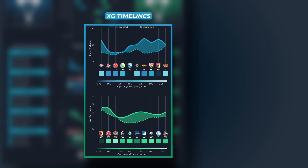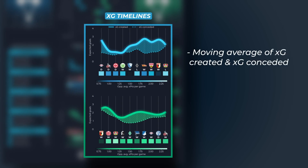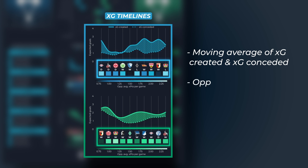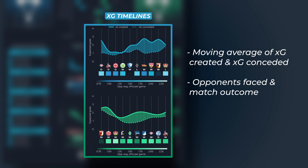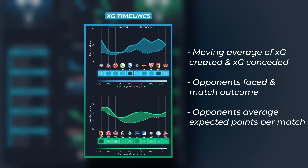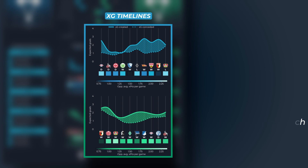The XG timelines show a moving average of XG created and XG conceded for the past 10 matches. We provide more context by showing the opponents faced in these matches and the result, along with their opponents' average expected points per match, with brighter colors indicating higher expected points. This also gives us an indication of match difficulty.